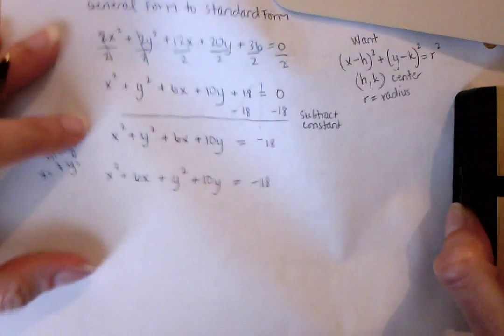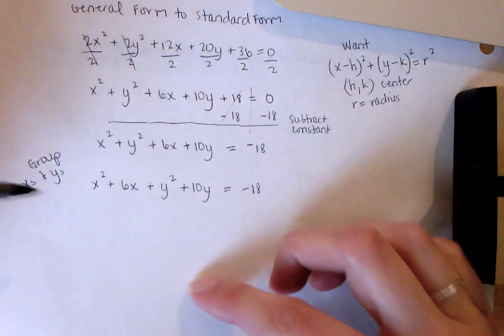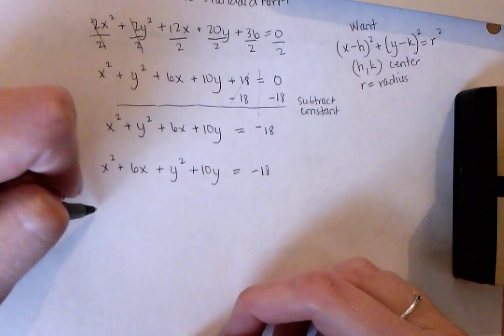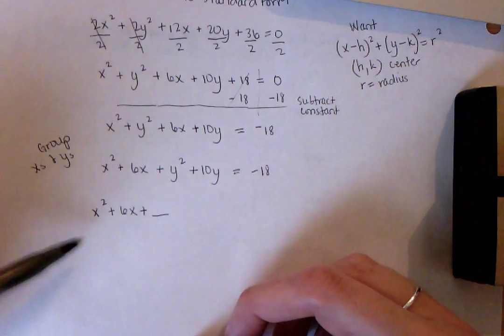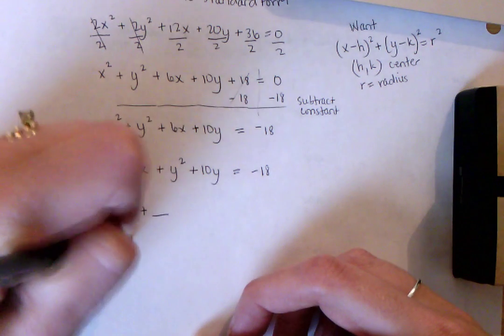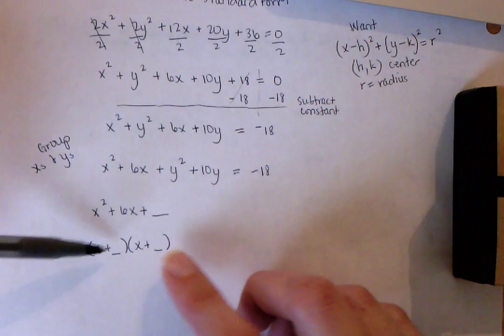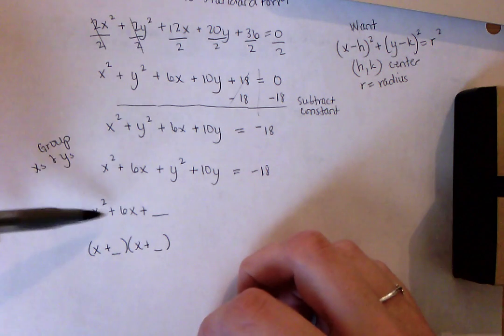Now we are ready to go ahead and complete the square. Really all that is, is we're trying to create a perfect square trinomial. Back in Algebra 1, you probably had to practice some of these where you saw it was x squared plus 6x plus some number. That number was a perfect square, and when you factored it, you would get x plus, and you'd have this number here. These two numbers would be the same number and they would multiply to give you that number.